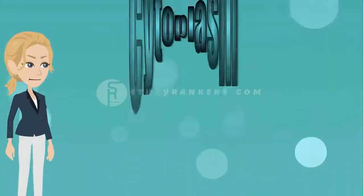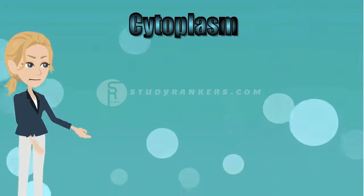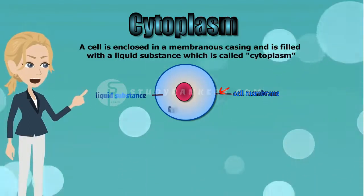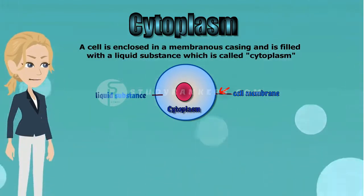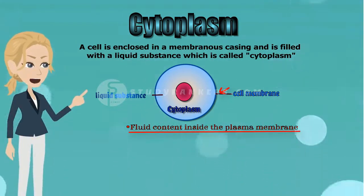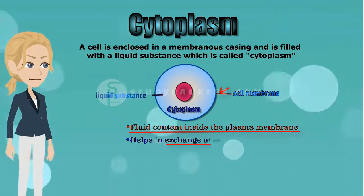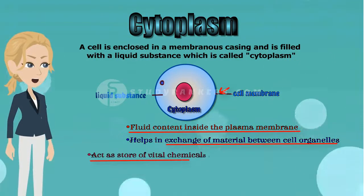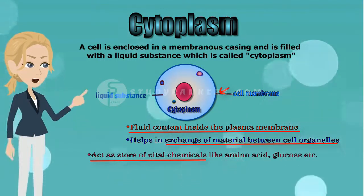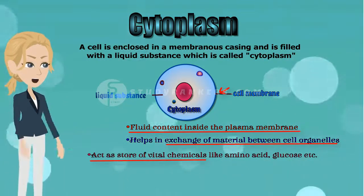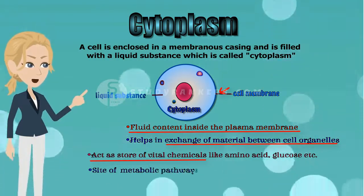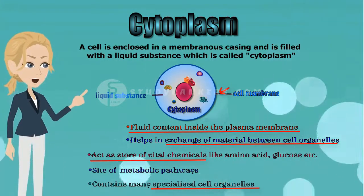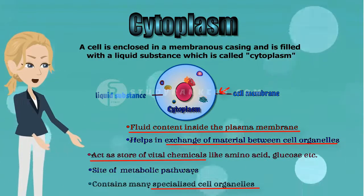Our next topic is cytoplasm. A cell is enclosed in a membranous casing and is filled with a liquid substance, which is called the cytoplasm. It means cytoplasm is the fluid content inside the plasma membrane. It helps in exchange of material between cell organelles. It also acts as a store of vital chemicals like amino acid, glucose, etc. The most important, cytoplasm is the site of certain metabolic pathways. It also contains many specialized cell organelles. Each of these organelles performs a specific function for the cell.